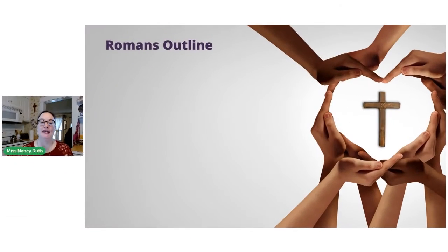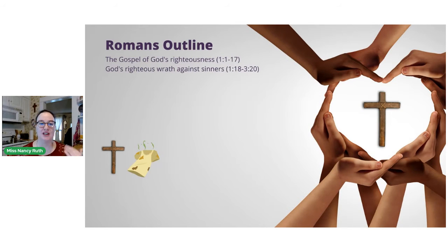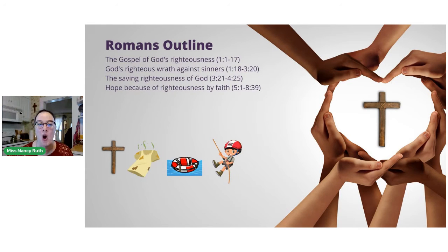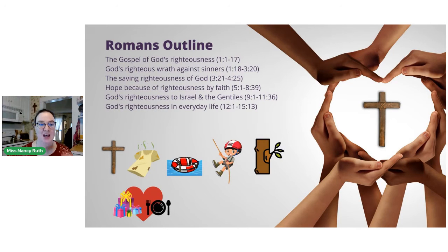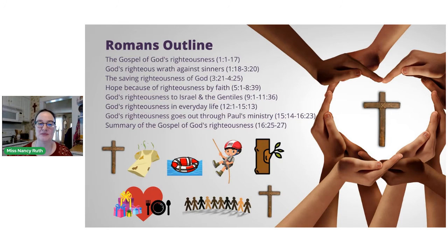Let's look at a quick outline of the book of Romans — a bird's eye view. First, the gospel of God's righteousness in chapter 1, verses 1–17. Then God's righteous wrath against sinners — that's part of the consequences of sin. Next is the saving righteousness of God — that's how you can be saved. Then the hope because of righteousness by faith. Next is God's righteousness to Israel and the Gentiles — remember that conflict? Then God's righteousness in everyday life, God's righteousness going out through Paul's ministry, and finally a summary of the gospel of God's righteousness.